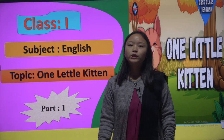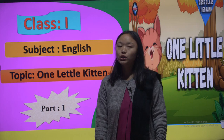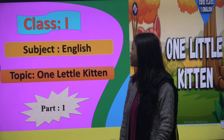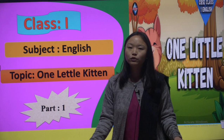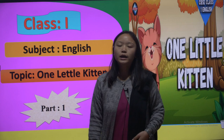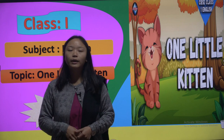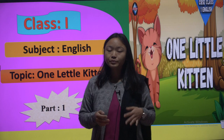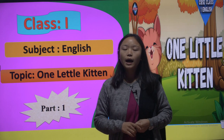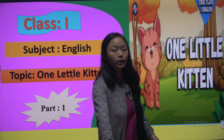Hello students, welcome back to the English class. Today we are going to do English of Class 1 and we are going to do a new topic. The name of the topic is 'One Little Kitten'. It is a beautiful poem and in this poem we will learn about different animals — birds, insects, sea animals. Let's see what the poet is talking about.